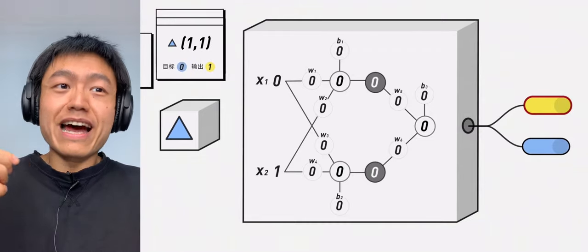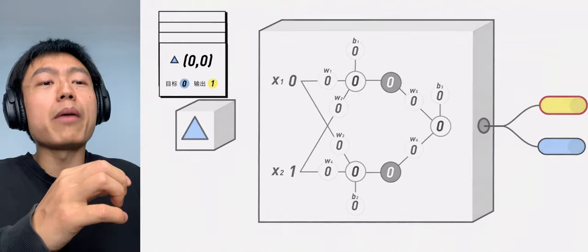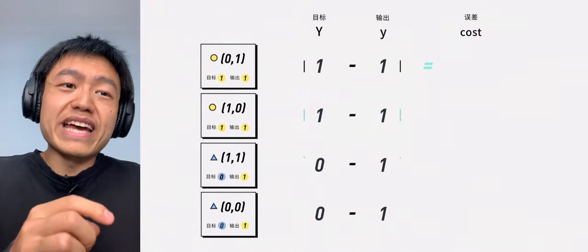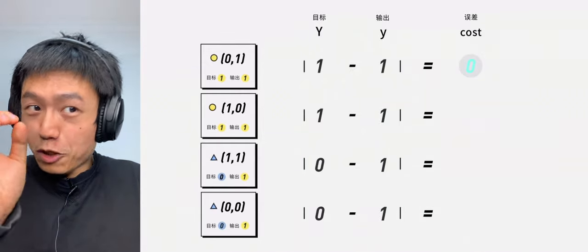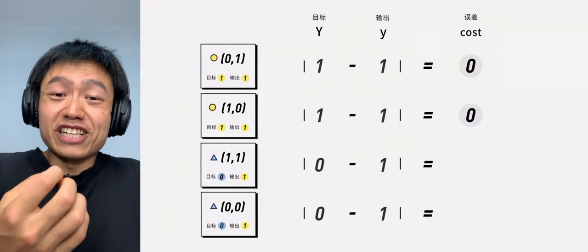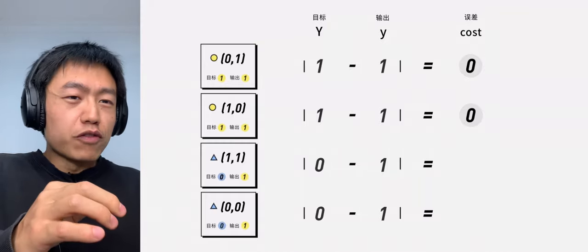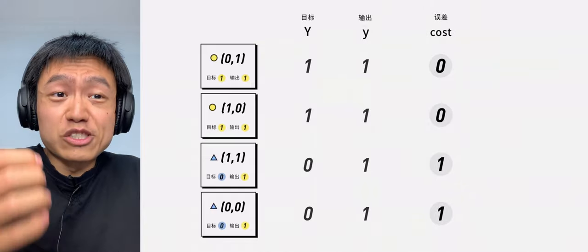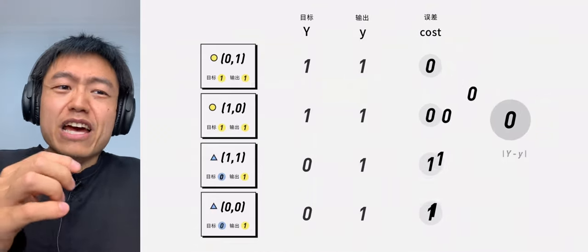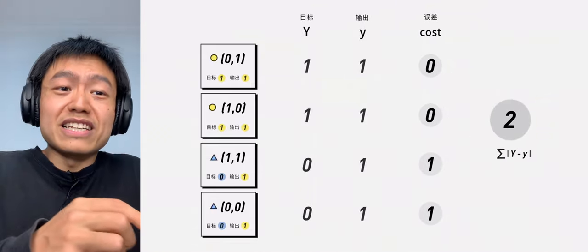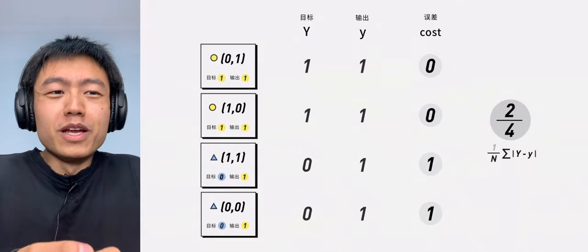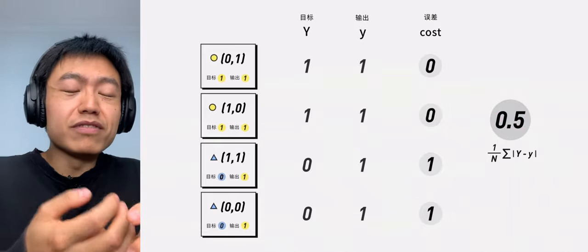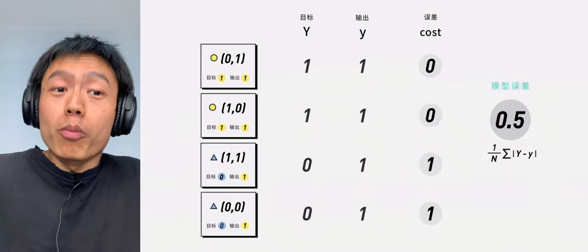To measure the error, our machine can calculate the absolute value of uppercase Y minus lowercase y. If the error of (0,1) and (1,0) is 0, the classification is correct. The error of (0,0) and (1,1) is 1, then the classification is wrong. We can add the error of each point by dividing the total number of input points, which is 4, and we get the result of 0.5. This value is the error of the whole model.